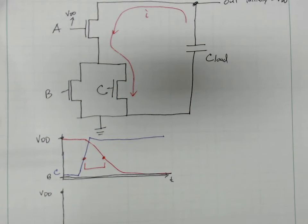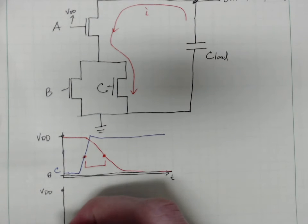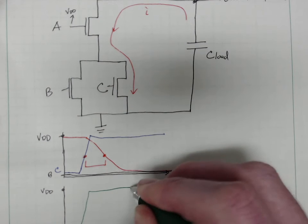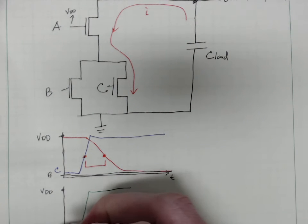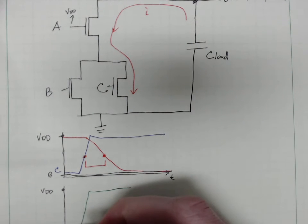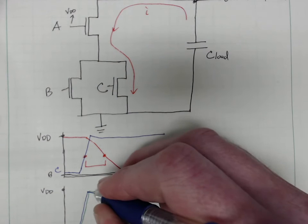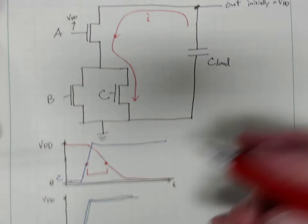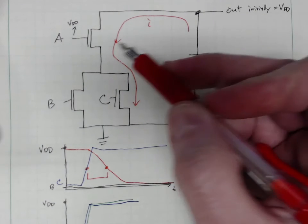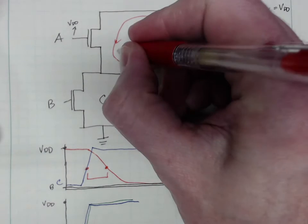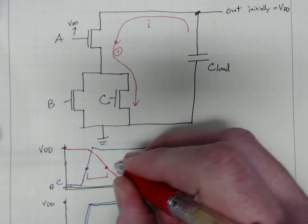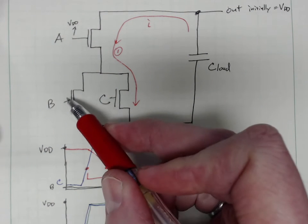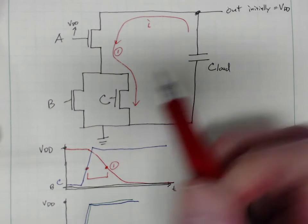Next up, we're gonna actually have B go from low to high, and also C is gonna go low to high at the same time, or basically the same time. During that transition, this is option one. Now this is a number two option.